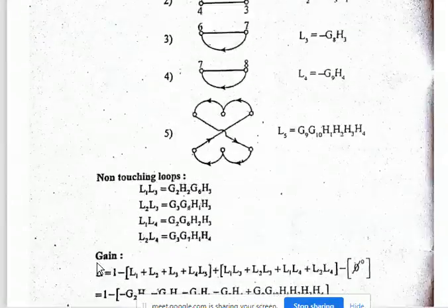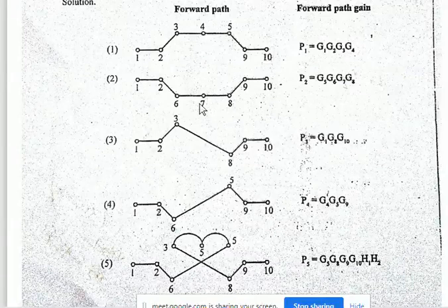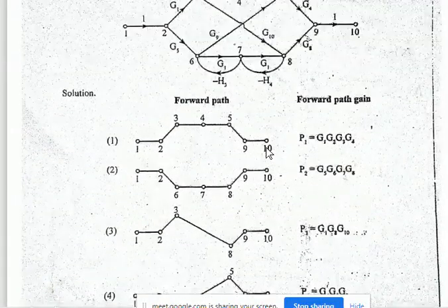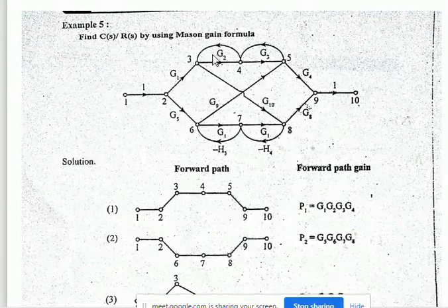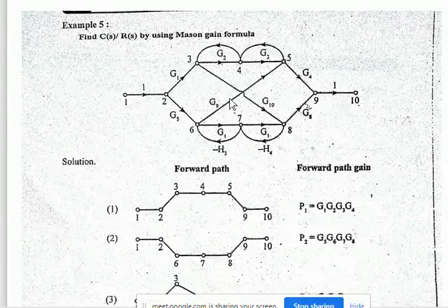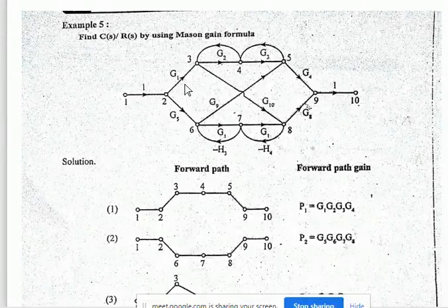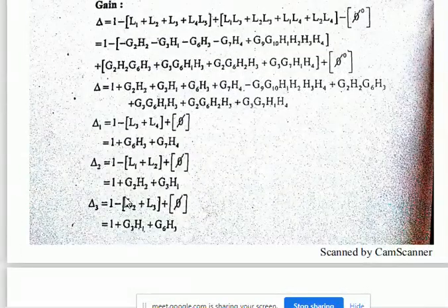For Delta 3, the third forward path is 1→2→3→8→9→10. L1 touches node 3, and L4 touches node 8, so they are excluded. L2 and L3 are non-touching to this forward path. Therefore Delta 3 = 1 − (L2 + L3).